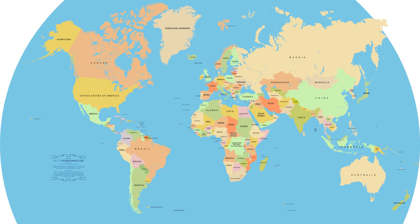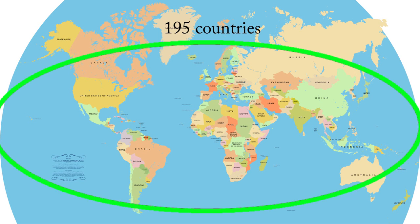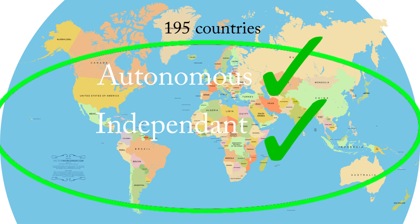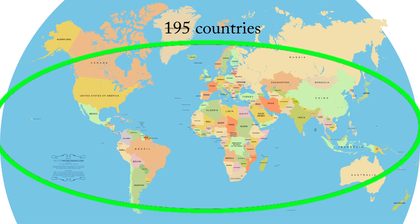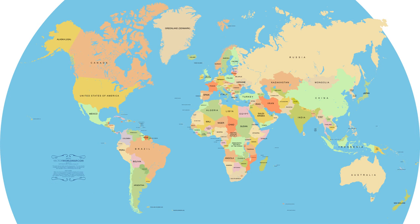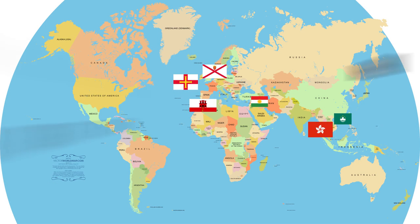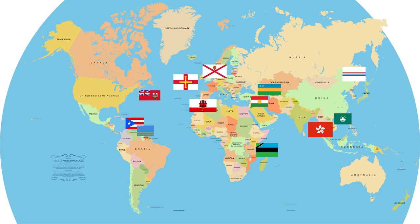If you were to count every country on a world map, you would count roughly 195 countries. Each of these countries is autonomous and independent, but these 195 states are not the only autonomous regions in the world. Today we will be exploring the autonomous regions of the world that do not appear on a standard world map. This is everything you need to know about autonomous areas.